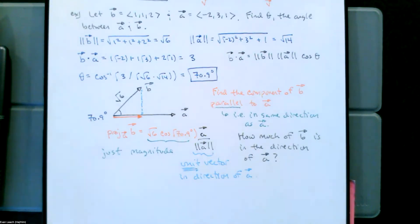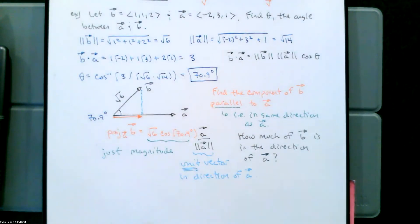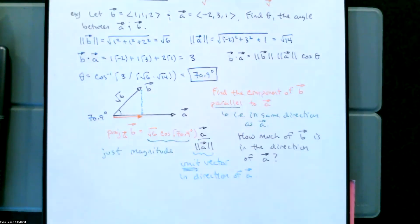Suppose A and B are pulling on something and we're trying to calculate work along the A direction — we want to know how much B is helping pull in the A direction. Imagine a train on tracks: one person is standing on the tracks pulling, but the other person says, 'I'm not standing in front of a train — I'll stand off to the side and pull at a 70-degree angle.' We want to know how much that B vector is helping pull the train along the A direction.